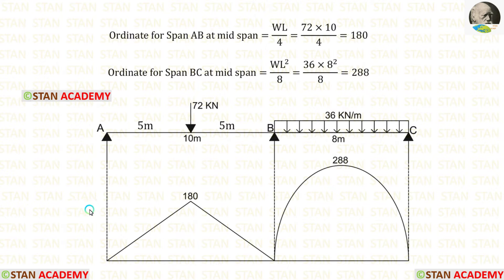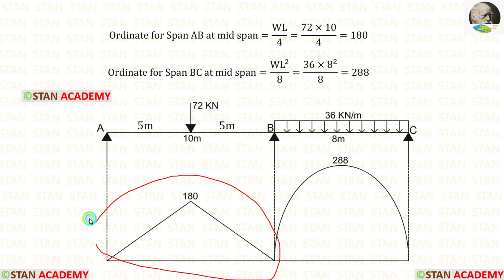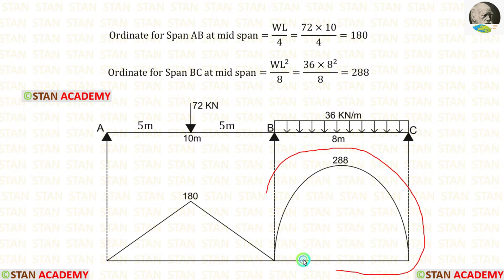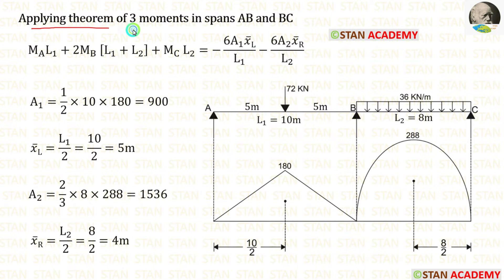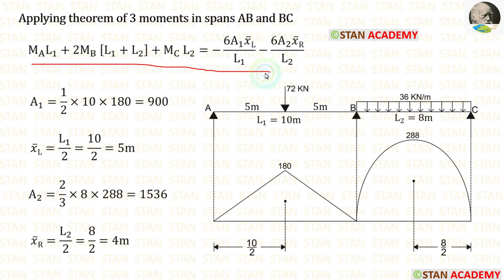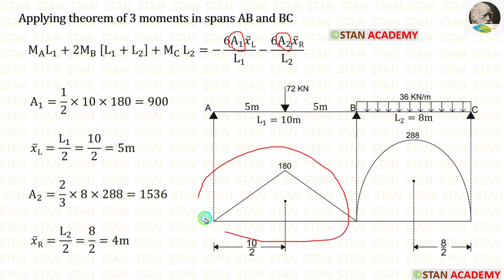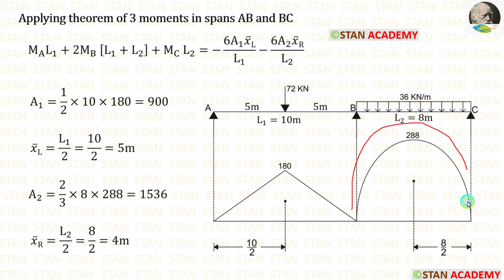If the point load is acting, the bending moment diagram will be in the shape of a triangle. If UDL is acting, the bending moment diagram will be in the shape of a parabola. Now let us apply the theorem of three moments in span AB and span BC. In the previous video, we derived the three moments equation. Here, we have to calculate area 1 and area 2 — area 1 for the triangle and area 2 for the parabola.